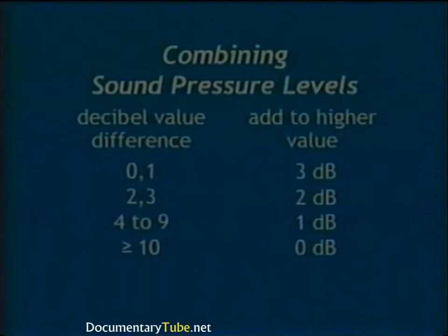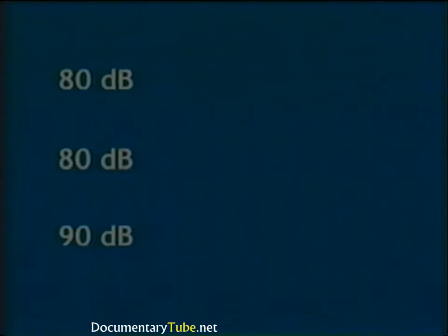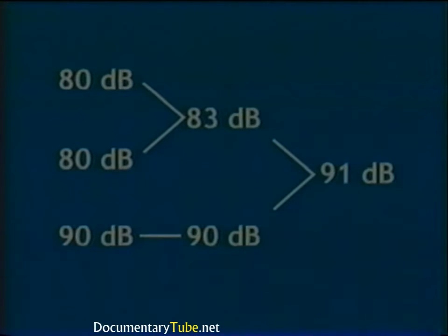For applications requiring only integer decibel accuracy, simple steps can be applied: find the decibel difference between two sound pressure levels, then add an adjustment factor to the higher level. If the difference is 0 or 1 dB, add 3 dB; for a difference of 2 or 3, add 2 dB; for 4 to 9, add 1 dB; if the difference is 10 dB or greater, the lower level can be ignored — the higher source masks the lower one. For example, combining 80 dB, 80 dB, and 90 dB: combine the two 80 dB levels (difference = 0, add 3) to get 83 dB; then 90 − 83 = 7, add 1 to 90 for a grand total of 91 dB.